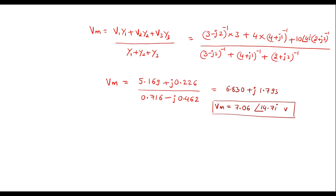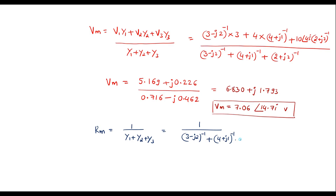Now we are supposed to calculate Millman's resistance, represented by Rm. Rm is given by 1 over (Y1 plus Y2 plus Y3), which is nothing but 1 over [(3 minus J2) inverse plus (4 plus J1) inverse plus (2 plus J2) inverse]. Solving this, we get 1.33 plus J0.288, which in polar form is 1.36 at an angle of 12.21.